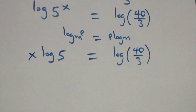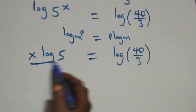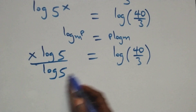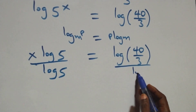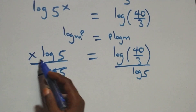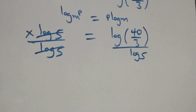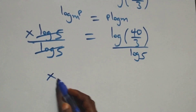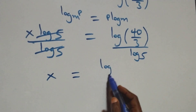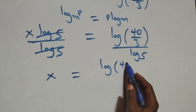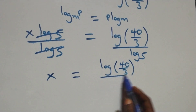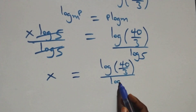Then we divide both sides by log 5. The log 5s cancel each other and we have x equals log(40/3) divided by log 5.